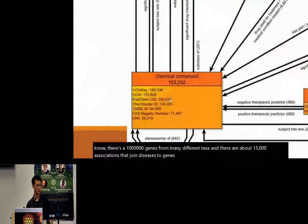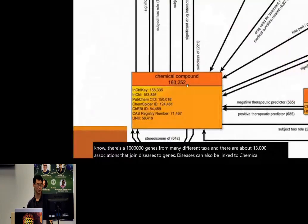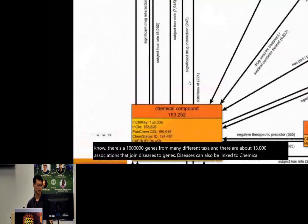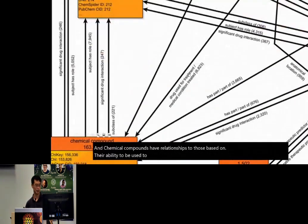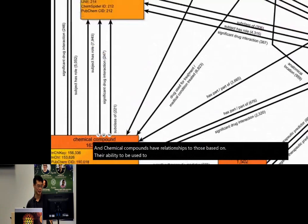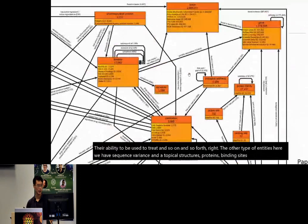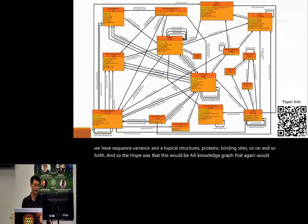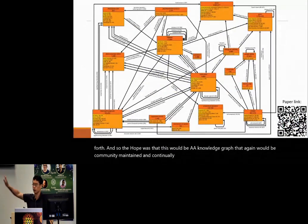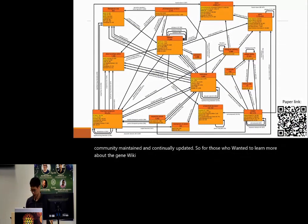Diseases can also be linked to chemical compounds, which have relationships based on their ability to treat conditions. Other entity types include sequence variants, anatomical structures, proteins, and binding sites. The hope was that this would be a community-maintained and continually updated knowledge graph. For those who want to learn more about the GeneWiki project, there's a QR code there.